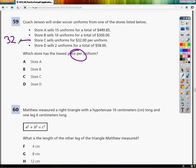Everything else I'm going to have to do a division. So for Store A, I need to take that $449.85 and divide it by 15. And I get $29.99. It's like they're having a sale or something.